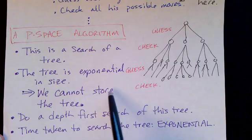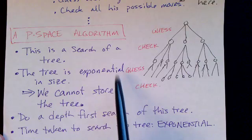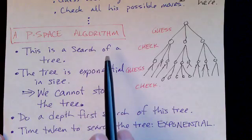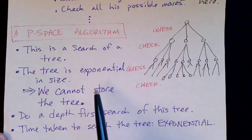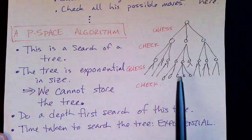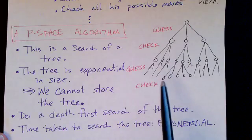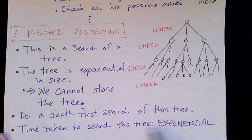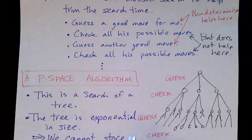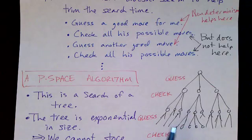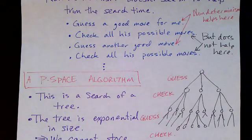And so we have to store this tree, but we can't store the tree. This is a P-SPACE algorithm, so since it's a P-SPACE algorithm, we don't have enough space to store the tree. We have to search the tree by doing a depth-first search. The time taken to search this tree is exponential. So that's the nature of the problem here. This sort of problem seems to require exponential time. Guessing is not good enough. The non-determinism doesn't help us. We still have to search the tree.